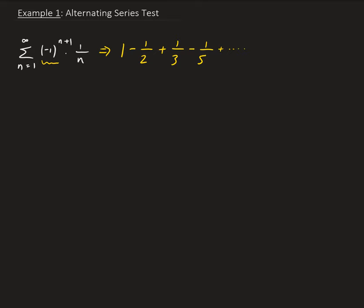So the first condition is that the limit of the nth term approaches 0. The second condition is that the nth plus 1 term is less than or equal to the nth term.